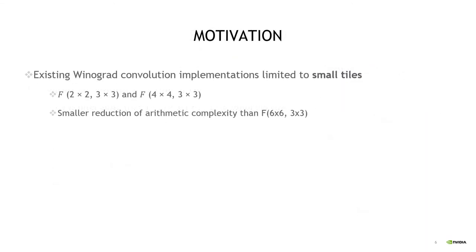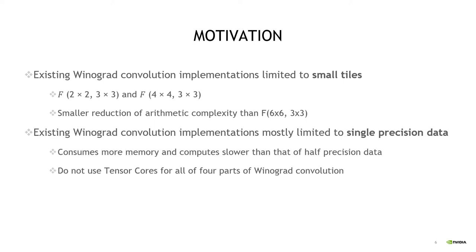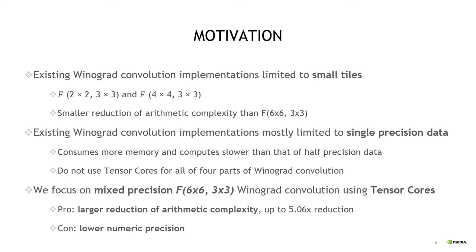However, existing implementations of Winograd Convolution are limited to small tiles, such as F2×2, 3×3 and F4×4, 3×3. These small tile implementations have a smaller reduction in arithmetic complexity than F6×6, 3×3. Also, existing implementations mostly use single precision data, which has lower memory and compute demands than half precision data, and they do not use Tensor Cores for all four parts of Winograd Convolution. Theoretically, F6×6, 3×3 Winograd Convolution achieves the most reduction in arithmetic complexity — up to 5.06× compared to direct convolution — but it has lower numerical precision.